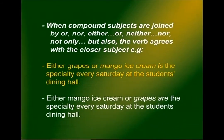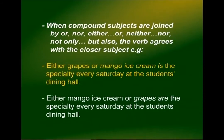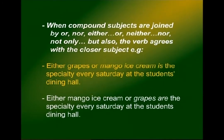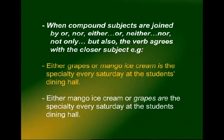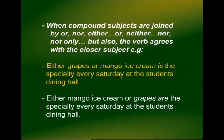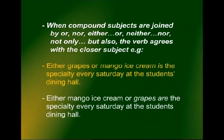Now notice the same sentence with the order reversed: 'Either mango ice cream or grapes are the specialty every Saturday at the students' dining hall.' Now the verb is 'are' — because the subject closest to the verb is 'grapes', and grapes are always in the plural.